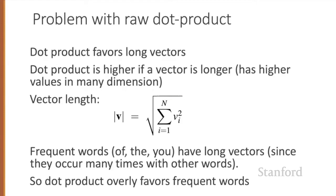The raw dot product, however, has a problem as a similarity metric: it favors long vectors. The vector length is defined as the square root of the sum of the squares of the values. The dot product is higher if a vector is longer with higher values in each dimension, and more frequent words have longer vectors, since they tend to co-occur with more words and have higher co-occurrence values. The raw dot product will thus be higher for frequent words, but we'd like a similarity metric that tells us how similar two words are regardless of their frequency.